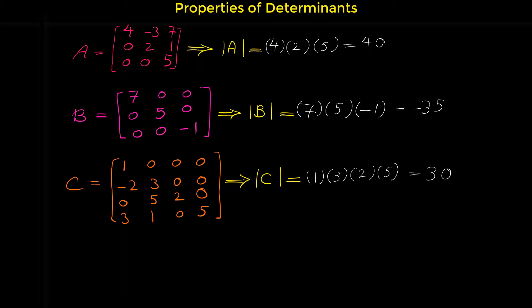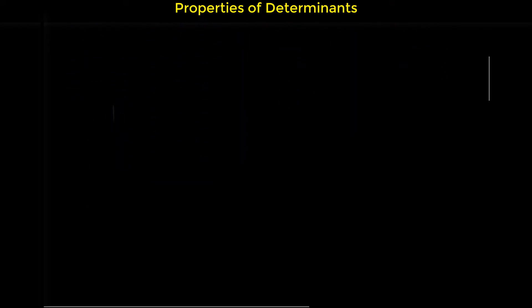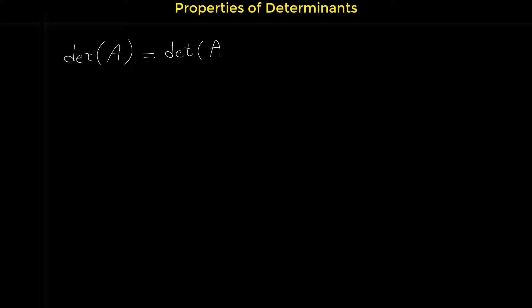The next property we want to learn is that if we transpose a matrix, the determinant of the matrix doesn't change. So if we have a matrix A, the determinant of matrix A is equal to the determinant of the transpose of matrix A.